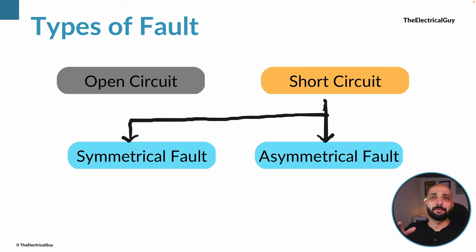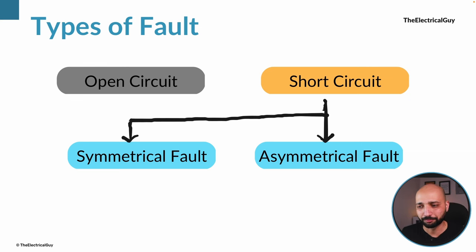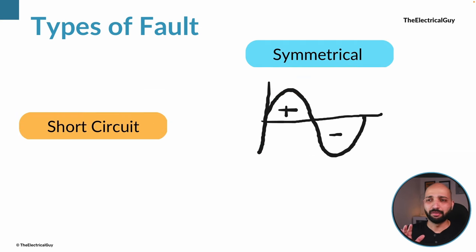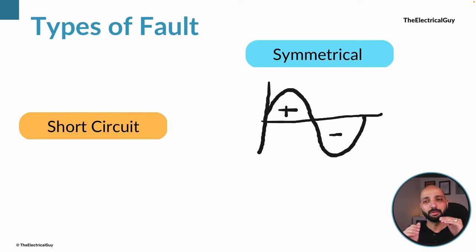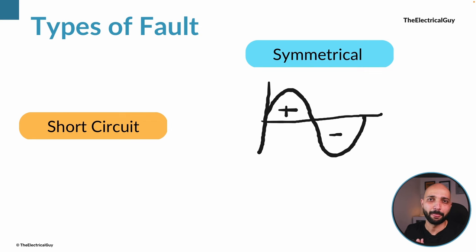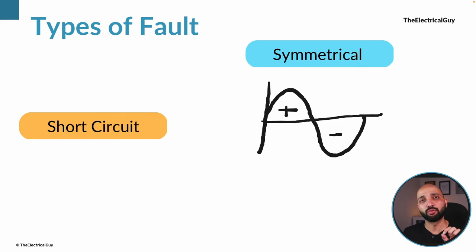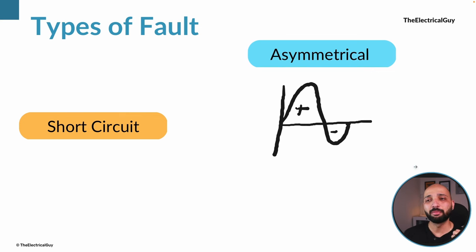Short circuit faults are divided into two types: symmetrical fault and asymmetrical fault. Symmetrical means both the positive cycle and the negative cycle are equal — the peak points of both cycles are equal. This is generally seen in a balanced load, where the positive half cycle and the negative half cycle are exactly equal and opposite to each other.